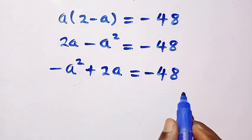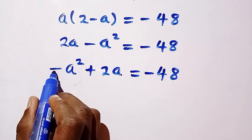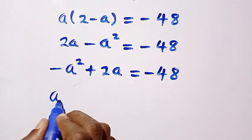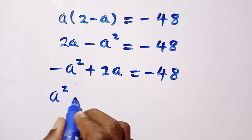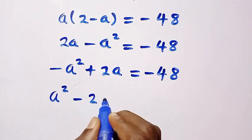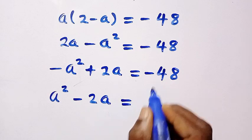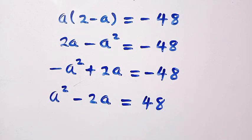Then by multiplying negative through, negative times this we have plus a squared and a is minus 2a equals - here becomes 48 when negative multiply through.